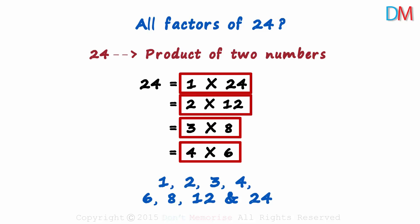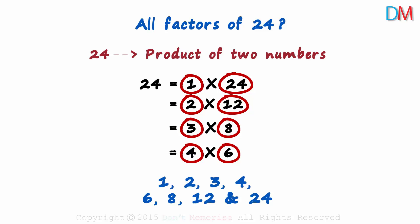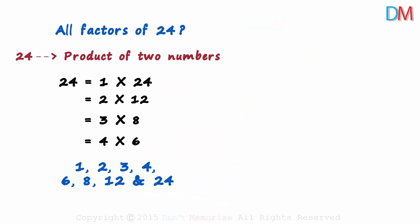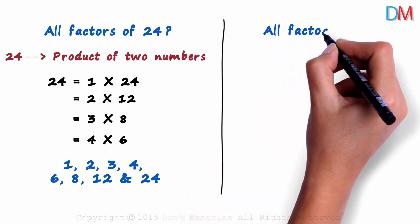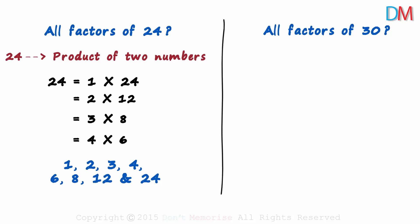We write the number as all possible products of two numbers. And then each of the numbers become a factor of that number. Let's try finding the factors of another number. We need to find all the factors of 30. To do that, all we have to do is write 30 as all possible products of two numbers.